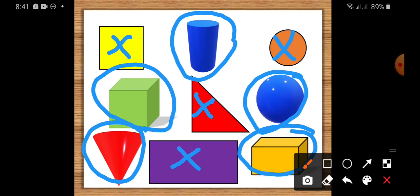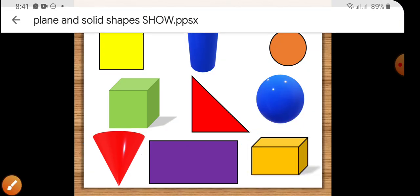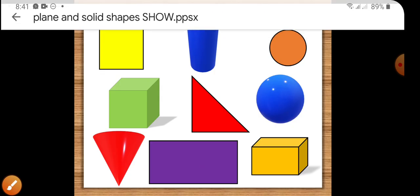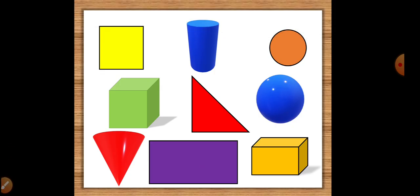Right! So we have learned to find fat solid shapes and flat plane shapes. Remember to look for light spots or a shadow to find the fat or solid shapes. Bye! Thank you.